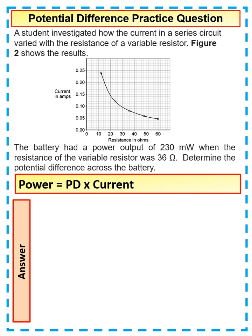A student investigated how the current in a circuit varied with the resistance of a variable resistor. Figure two shows this. The battery had a power output of 230 milliwatts. If it's in milliwatts, don't forget that we're going to have to convert that into watts at some point.